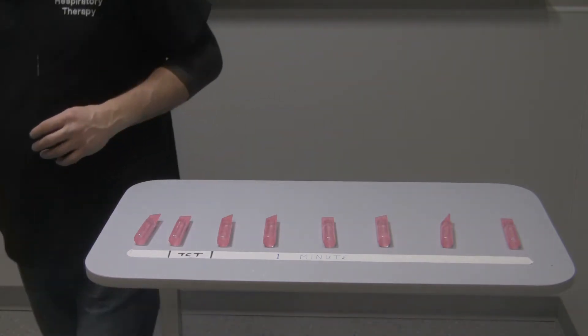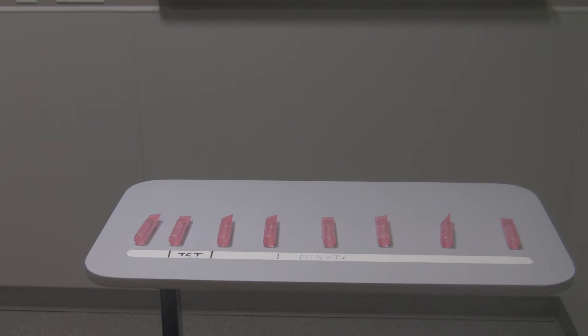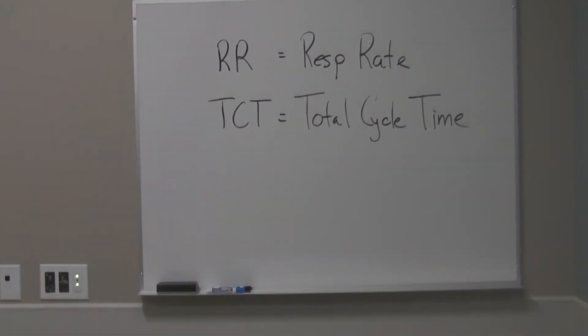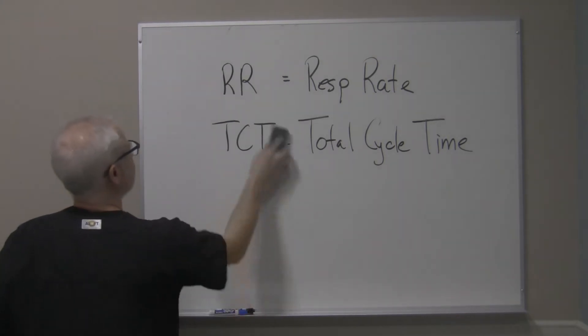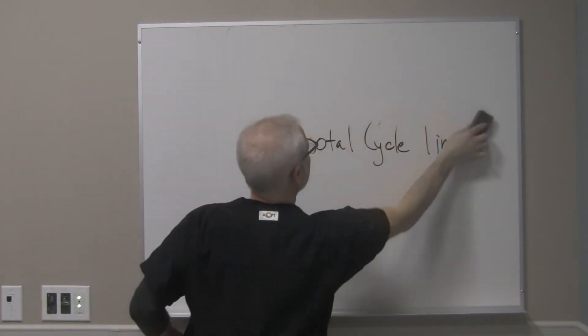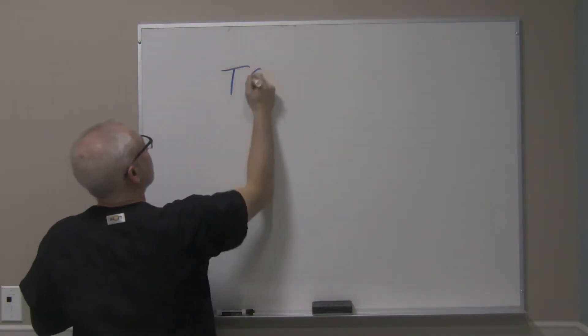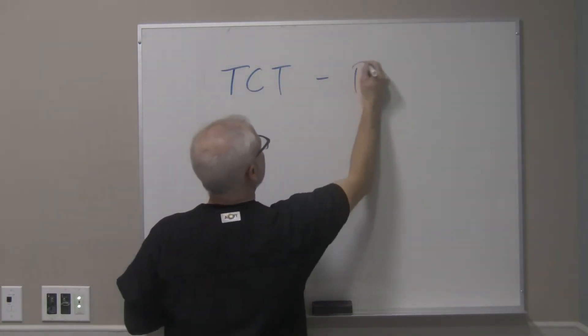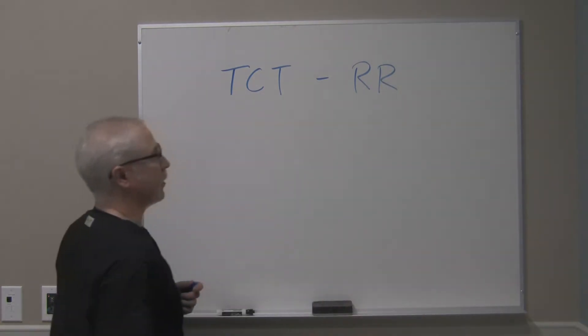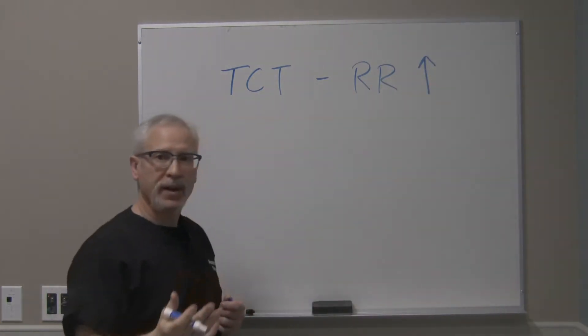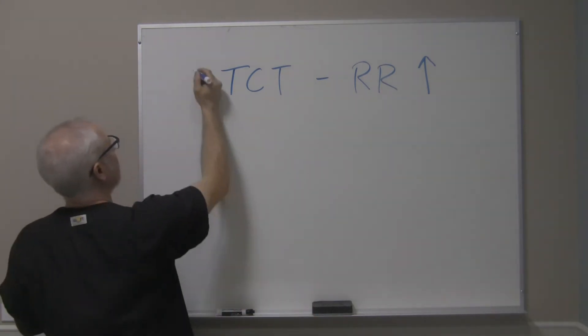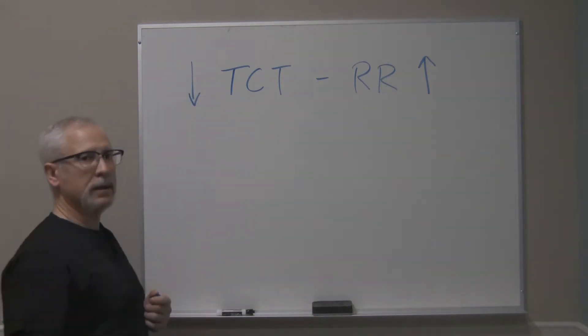So let's look at this relationship on the board. Total cycle time and respiratory rate. If the respiratory rate goes up, more breaths in one minute, the total cycle time is going to decrease.